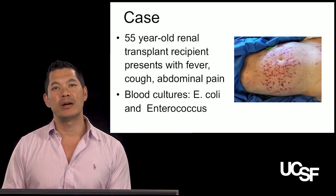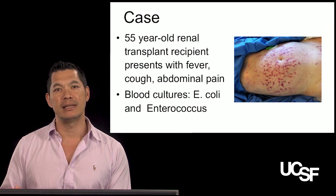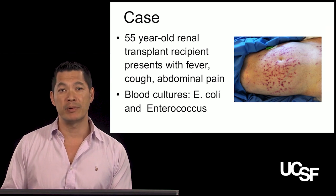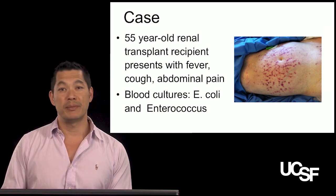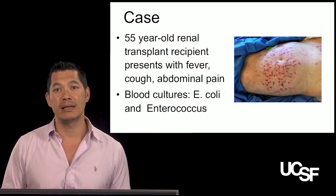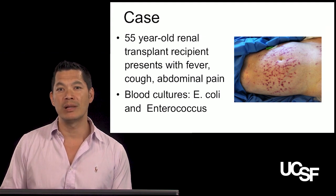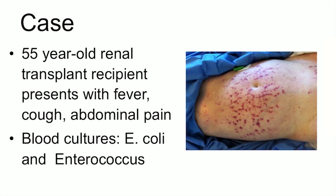Let's move on to the next case. This is a 55-year-old renal transplant patient presenting with fever, cough, and abdominal pain. On blood cultures the patient appears septic, and two organisms are found in the blood culture — E. coli and Enterococcus, both coming from the gut. The picture shows a weird rash on the abdomen that looks very inflammatory, almost petechial in appearance.